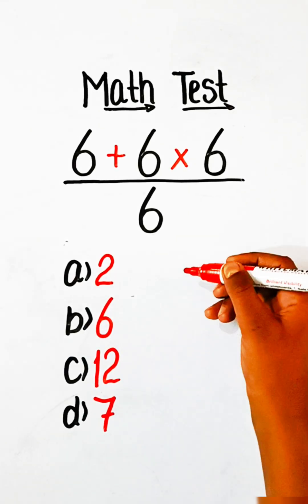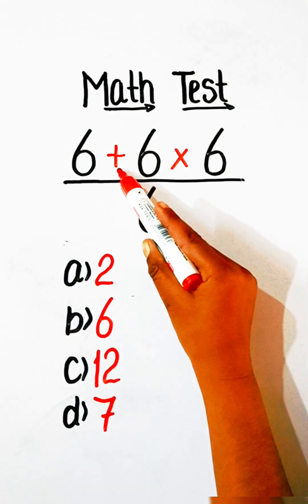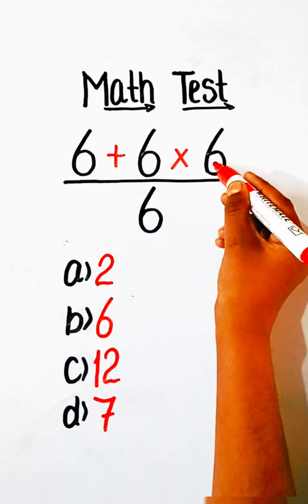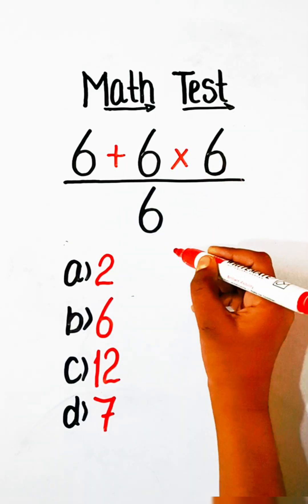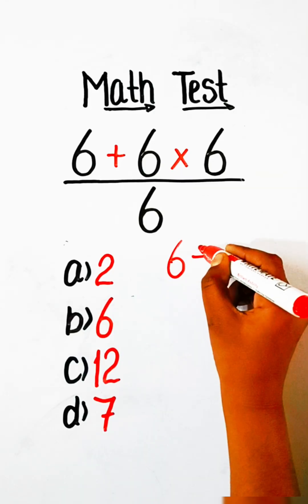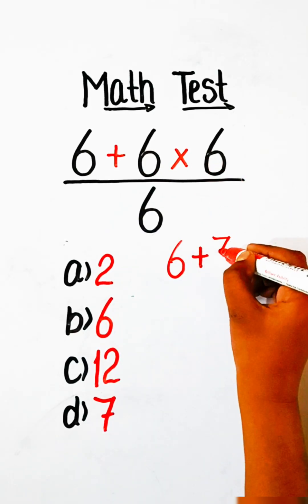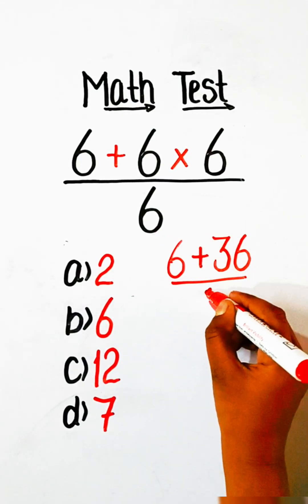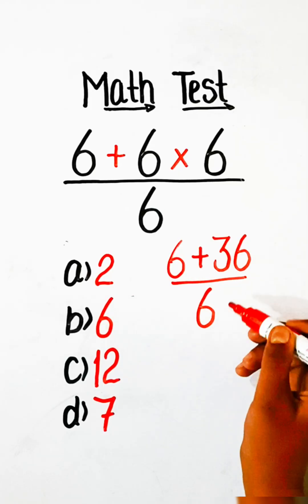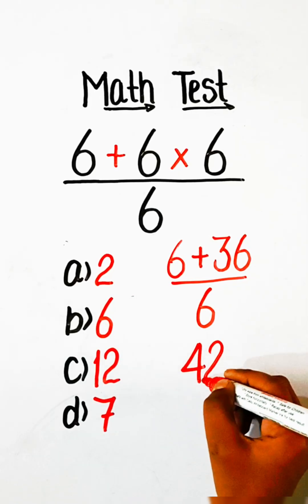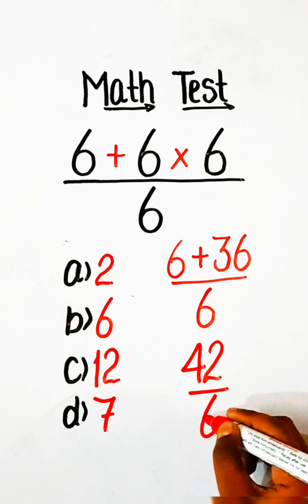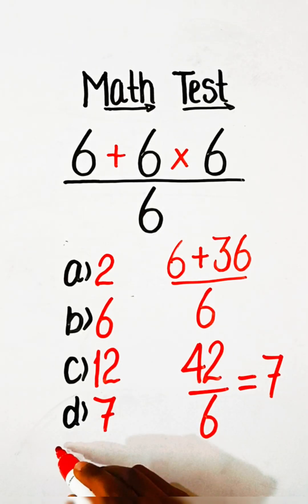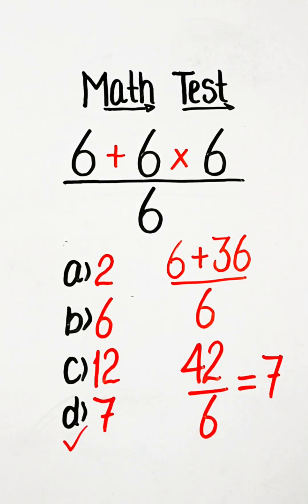So let's solve this. Here we have plus and multiplication, so we will do the multiplication part first. We write 6 plus 6×6, which is 36, upon 6. Then 6 plus 36 is 42 upon 6, which equals 7. So Option D, 7, is our correct answer.